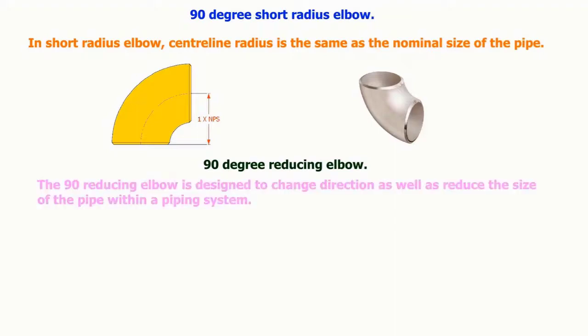The 90 reducing elbow is designed to change direction as well as reduce the size of the pipe within a piping system.